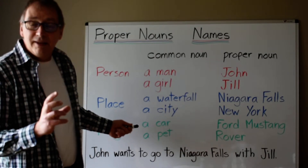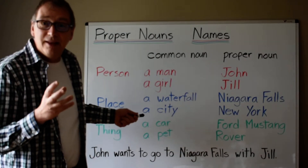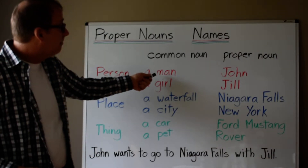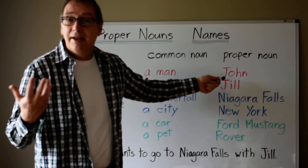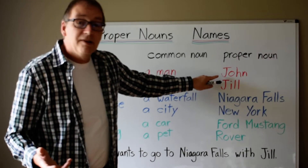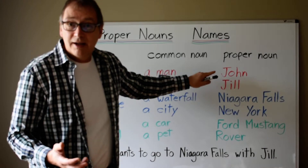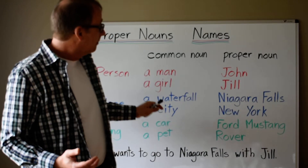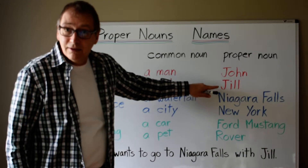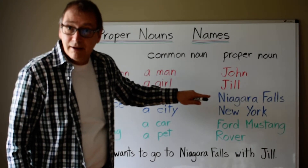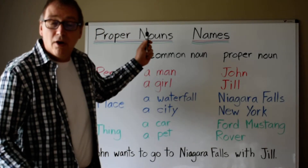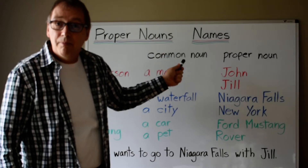But let's see what happens when we give these common nouns names. A man — if we give the man a name, John, the first letter of John needs a capital. A girl — Jill. Jill needs a capital J. It starts with a capital, and it's the same with all of the other proper nouns.